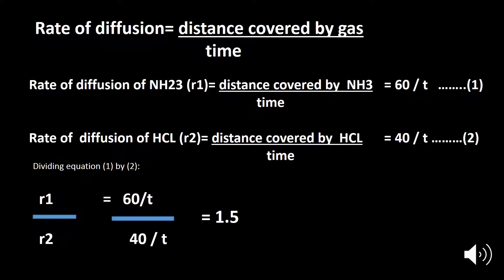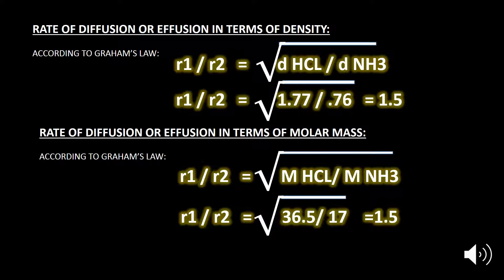This means ammonia diffuses 1.5 times more rapidly than HCl. We can also calculate this using Graham's Law. The density of HCl is 1.77 g/dm³ and the density of ammonia is 0.76 g/dm³. Putting these values into Graham's Law: R₁/R₂ = √(density of HCl / density of ammonia), which gives a result of 1.5.